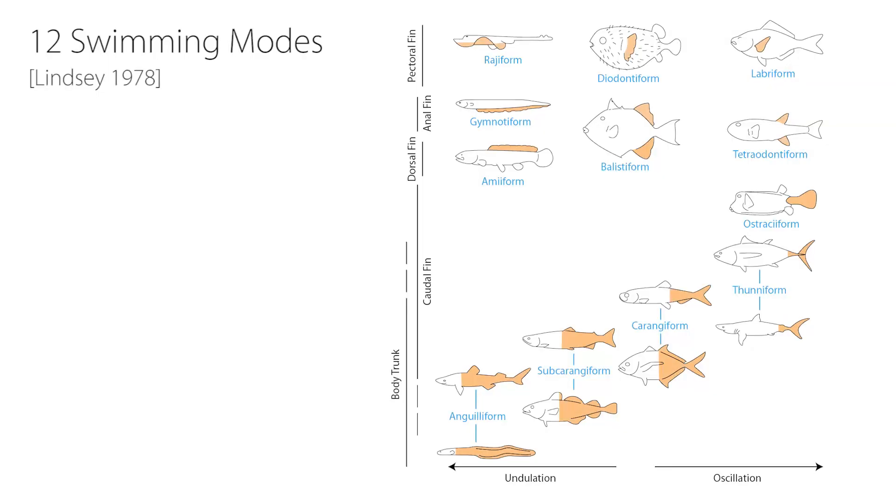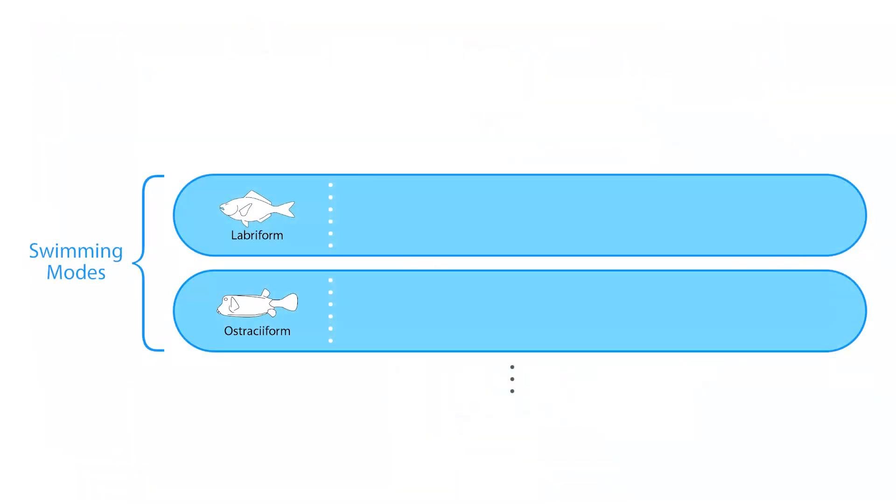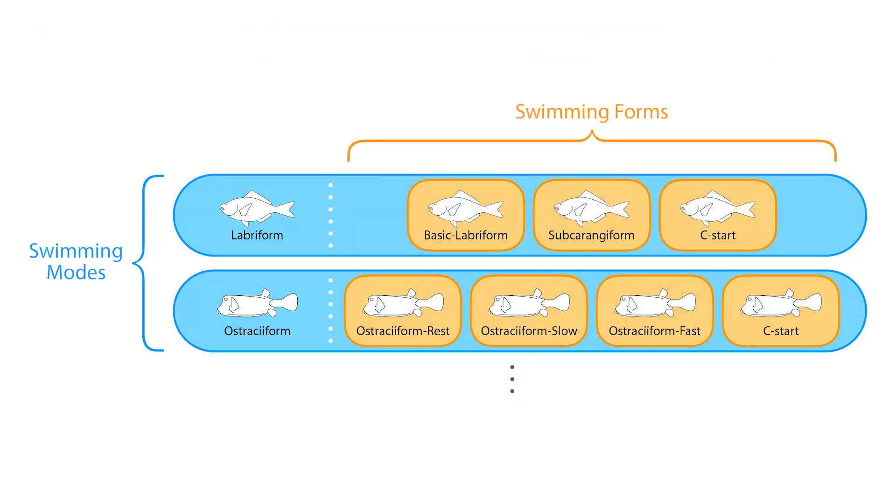In fish physiology, the swimming style of fishes is classified into 12 types of swimming modes. Even within the same swimming mode, fish use several different swimming forms.